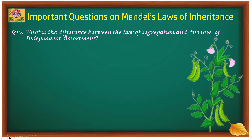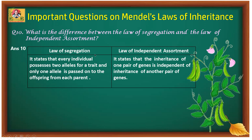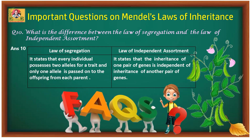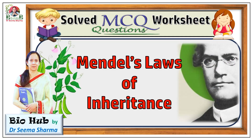Tenth and last question: what is the difference between the law of segregation and the law of independent assortment? The law of segregation states that every individual possesses two alleles for a trait and only one allele is passed on to the offspring from each parent, whereas the law of independent assortment states that inheritance of one pair of genes is independent of the inheritance of any other pair of genes. I hope the answers to these frequently asked questions on Mendel's laws of inheritance are now clear.